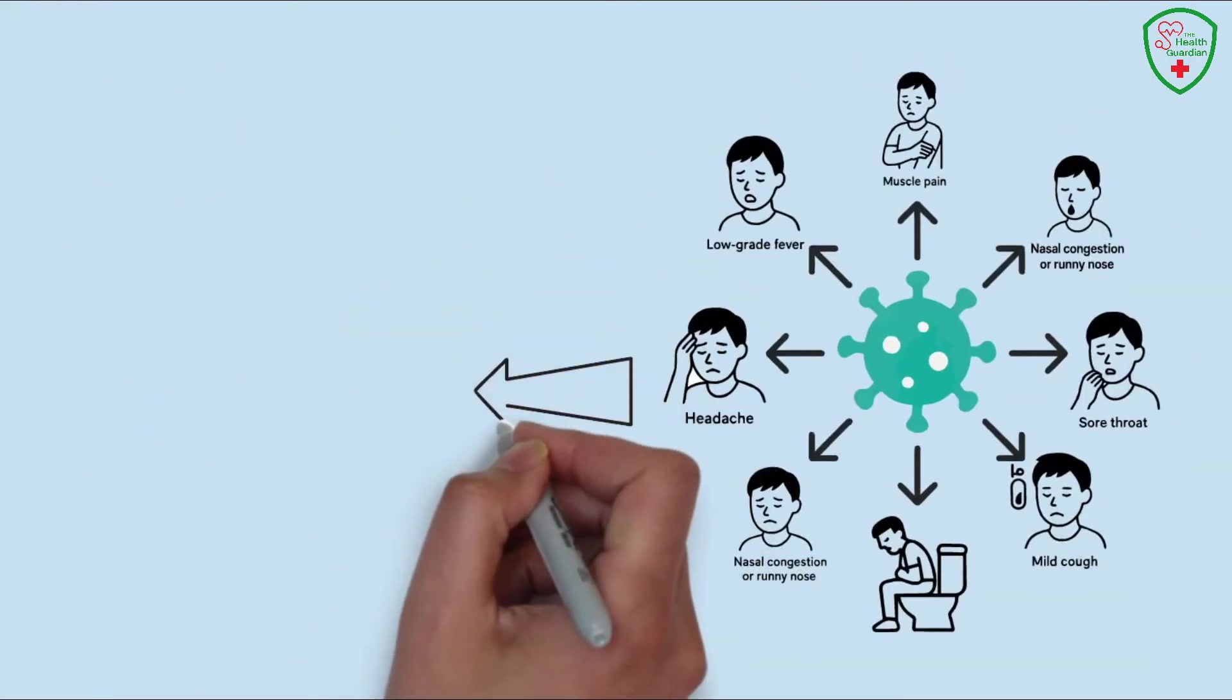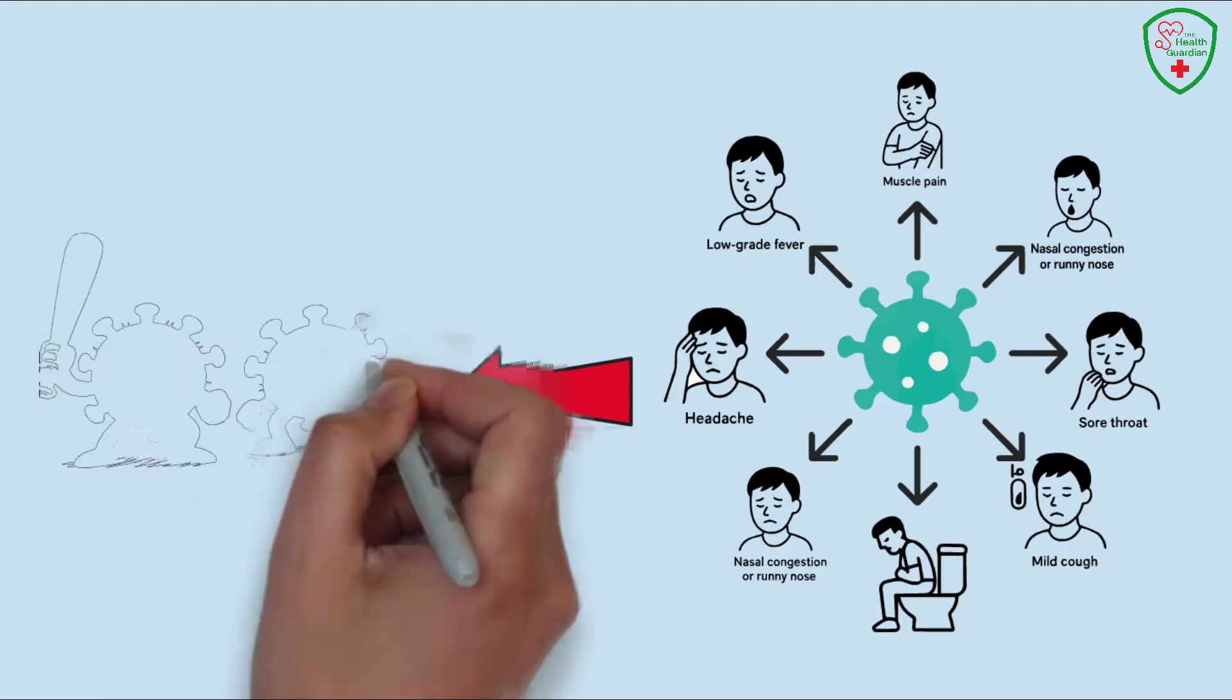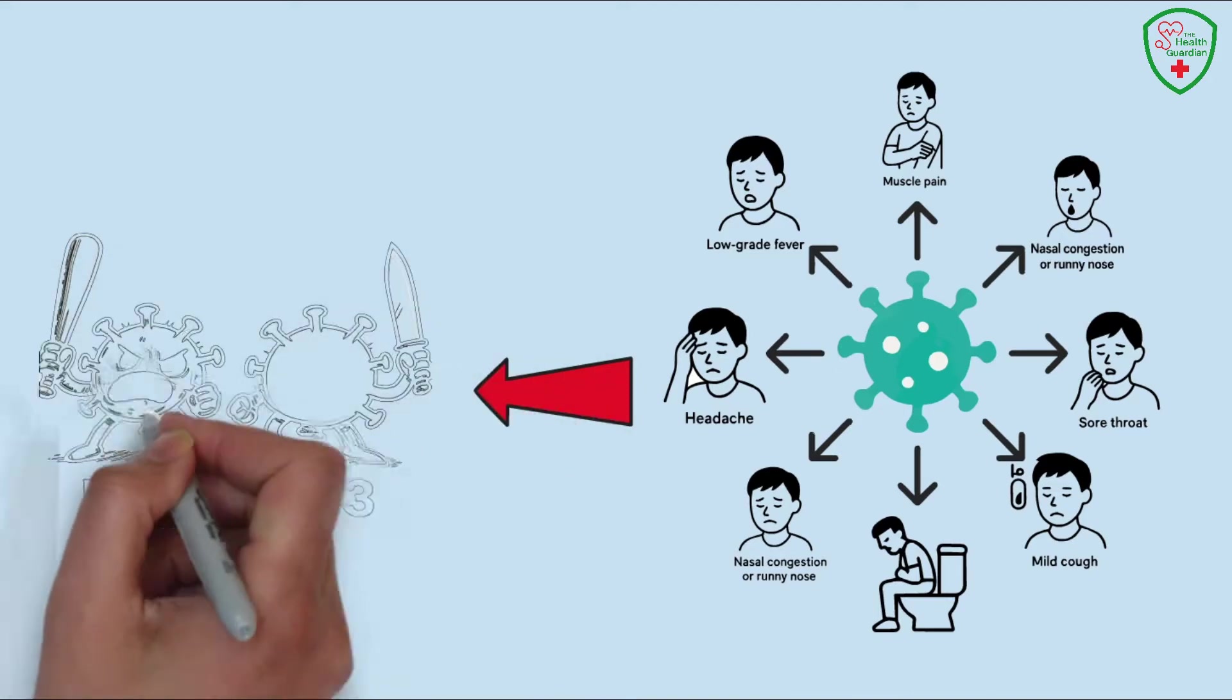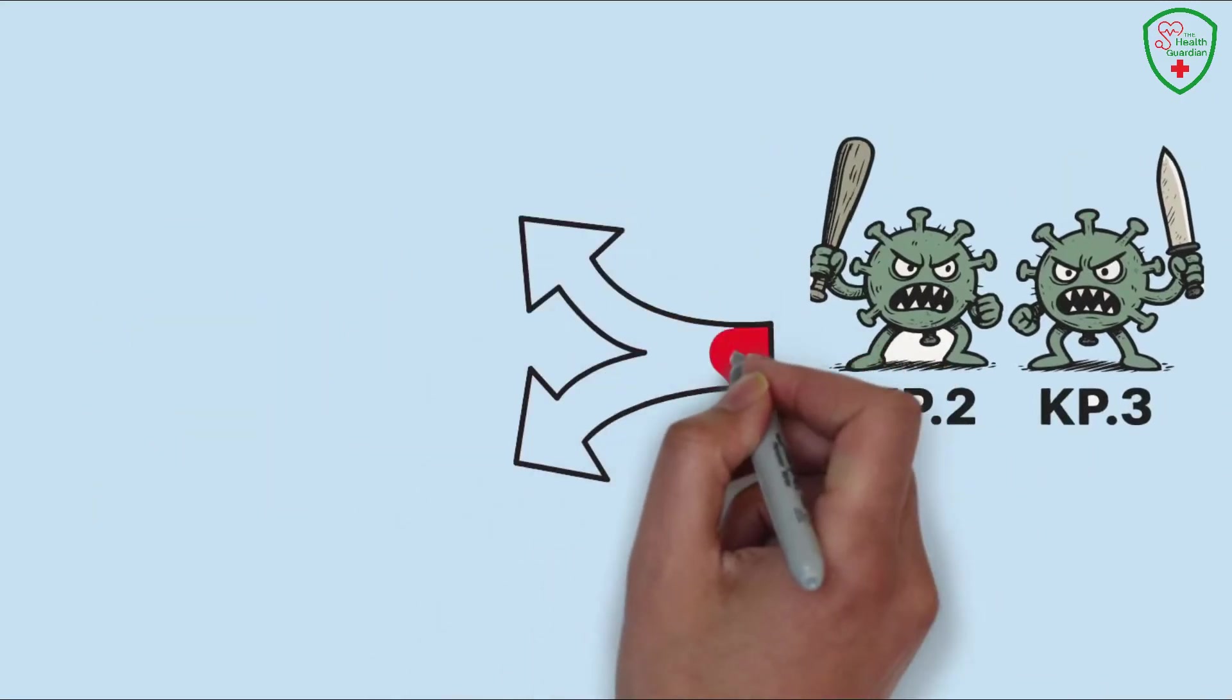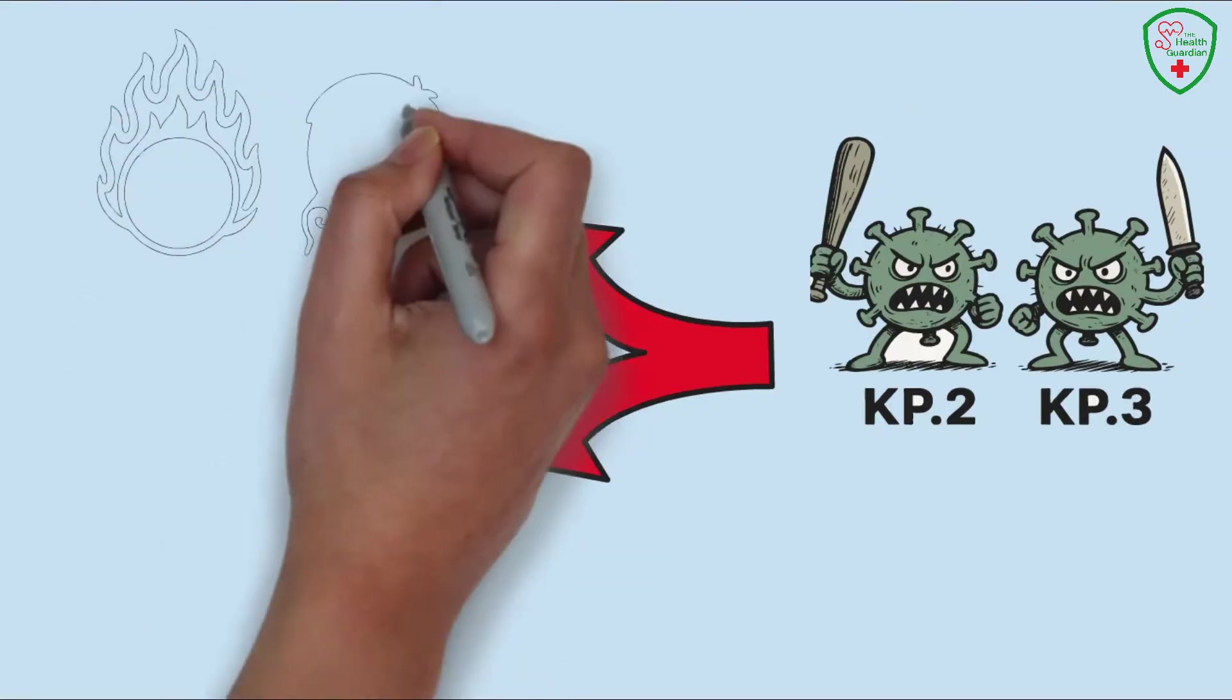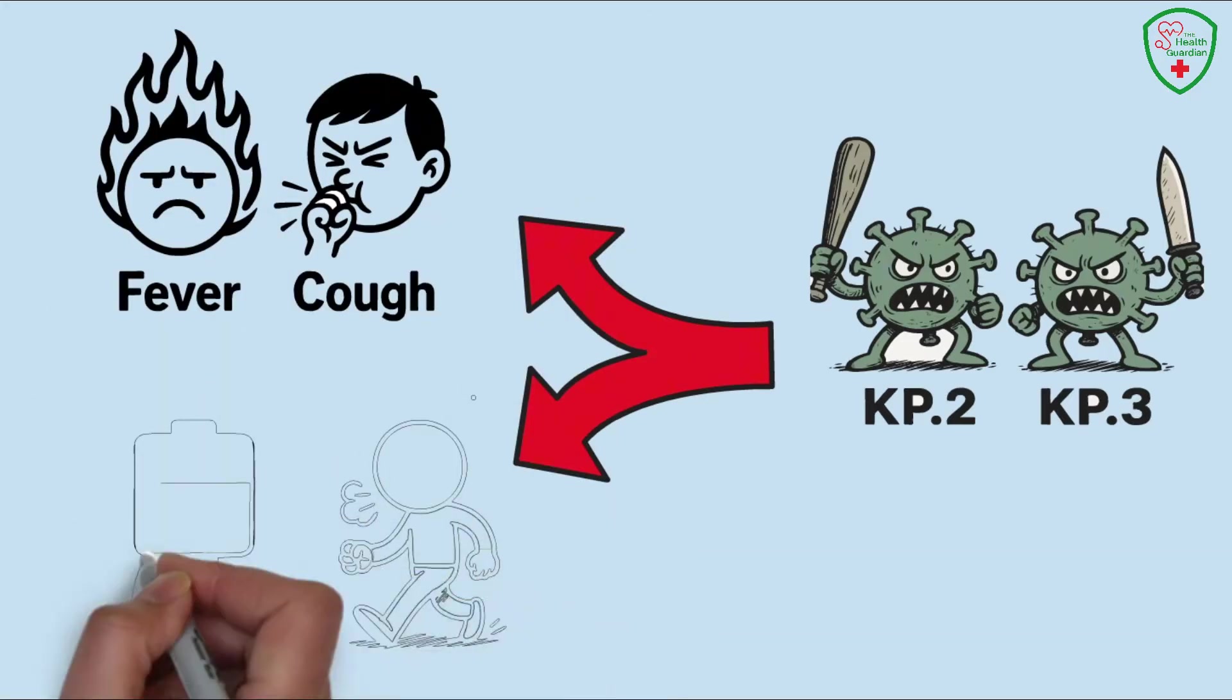Let's kick things off with the classics. You know the drill. Fever, dry cough, bone-deep fatigue, and shortness of breath. These are the OG symptoms we've been dealing with since 2020. And guess what? They're still the heavy hitters in 2025, even with the new FLIRT variants KP.2 and KP.3 spreading fast. Fever might feel like you're burning up, while that cough can be relentless, like a tickle in your throat that just won't quit. Fatigue? It's like your body's battery is stuck at 5%, and shortness of breath can make even a short walk feel like a marathon.